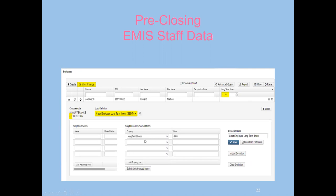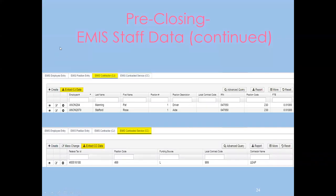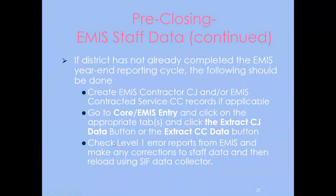If your district hasn't completed their EMIS year-end reporting cycle yet, make sure you do your CJ contracted service and CC records. Go to Core, then EMIS Entry, and for CJ records, create and extract those. Click 'Extract CC Data' for the CC records. Make sure this is completed for the EMIS reporting period before moving on to the next one — I believe the completion deadline is around August 9th.